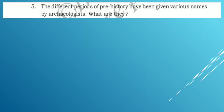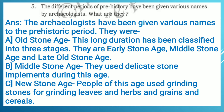Fifth question: the different periods of prehistory have been given various names by archaeologists. What are they? Answer: the archaeologists have given various names to the prehistoric period. A: old stone age — this long duration has been classified into three stages: early stone age, middle stone age, and late old stone age. B: middle stone age — they used delicate stone implements during this age. C: new stone age — people of this age used grinding stones for grinding leaves, herbs, grains and cereals.